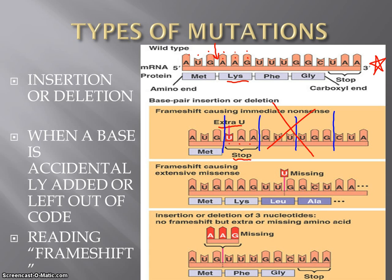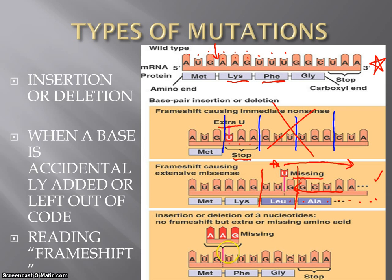In our next example, going down to our third codon, which was previously UUU — phenylalanine — a uracil has been deleted, which causes everything from that point on to shift back. So now we read it as UUG, which is leucine. Notice one really nasty thing about insertions or deletions, which is why we call them frame shifts: it changes our reading frame. Everything from the mutation onward downstream is changed. All of the amino acids that occur after that are altered, which is pretty bad.